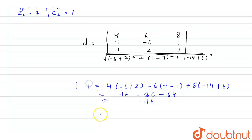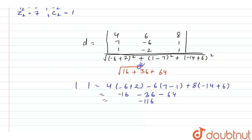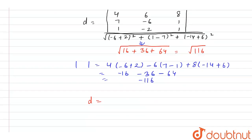Solving the denominator: (-4)² + (-6)² + (-8)² = 16 + 36 + 64 = 116. So the denominator is the square root of 116.